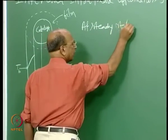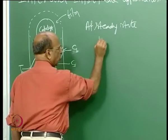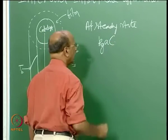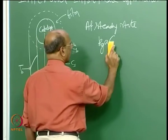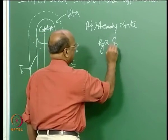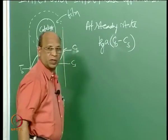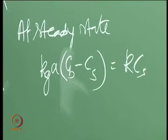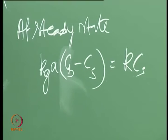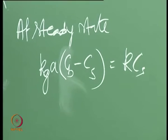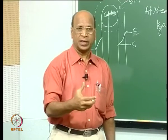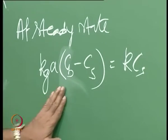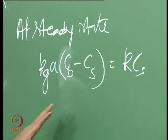At steady state, the rate of mass transfer must equal the rate of reaction. Writing the equations directly since we have done this many times: K_G · A · (C_B − C_S) = K · C_S. Here A is in cm² per cm³ of particle — that is, surface area per unit volume of the particle. There will be a lot of confusion about units, so I am pointing this out even though it seems simple.